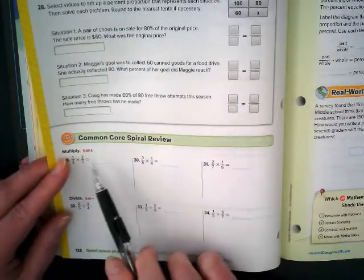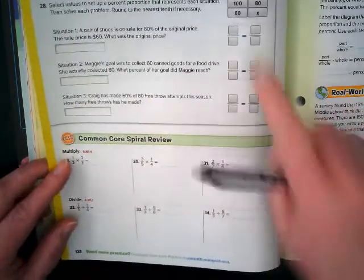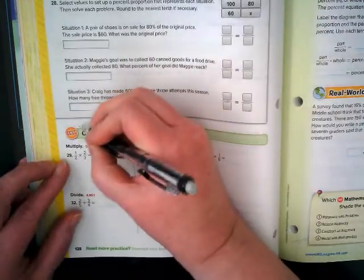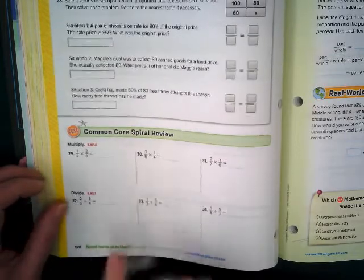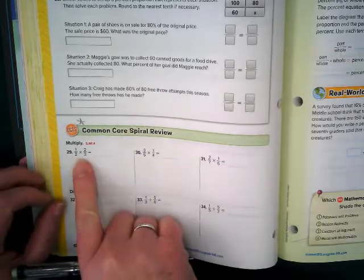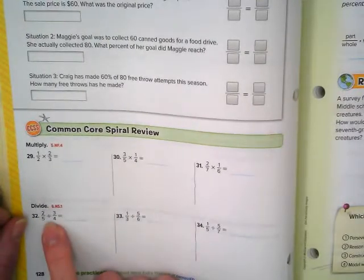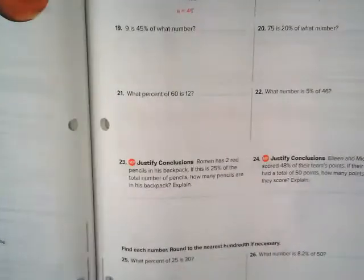What percent of 300 is 0.6? Here's the 'of'. That's telling us that it's the whole. Here's the part, 0.6. What percent means the question mark would go here or the variable over 100.